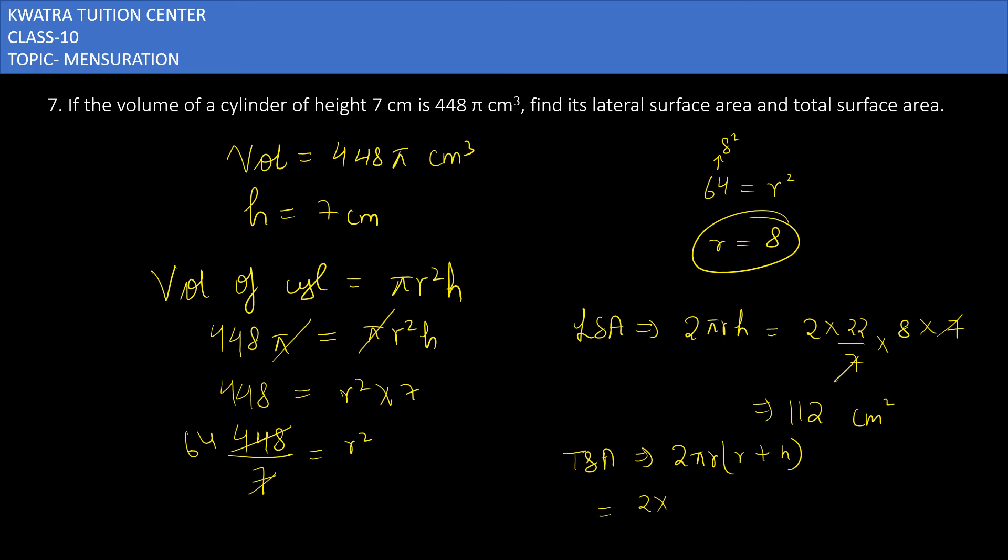Now putting all the values in it. π is 22/7, then r is 8, and then you have 8 plus h. H in this case is 7. So you have 44/7 into 8, and in bracket 8 plus 7 will be 15. Then you have to multiply it and divide it with the value.